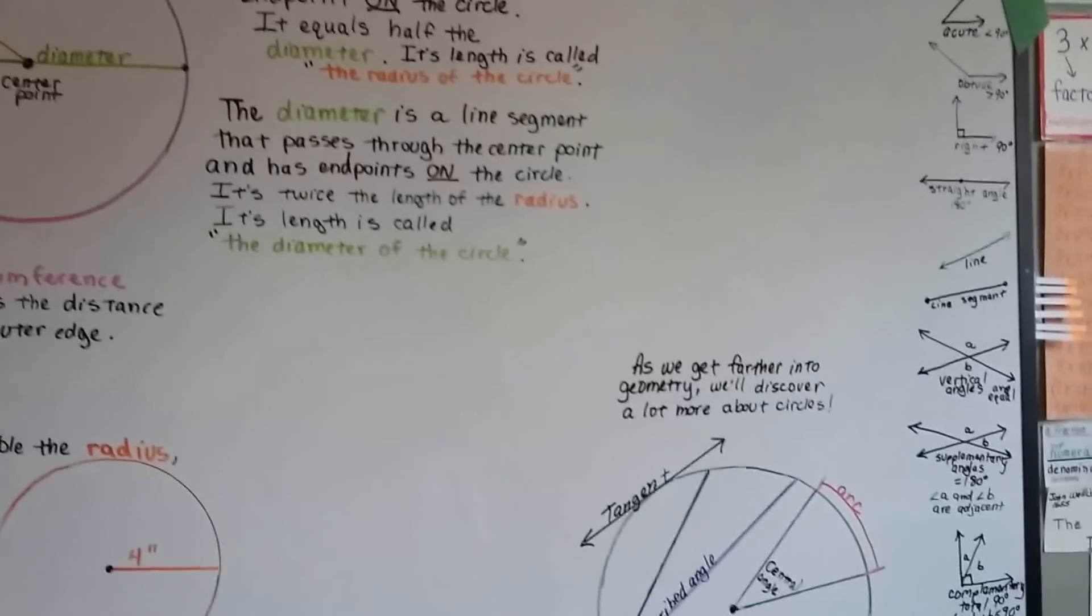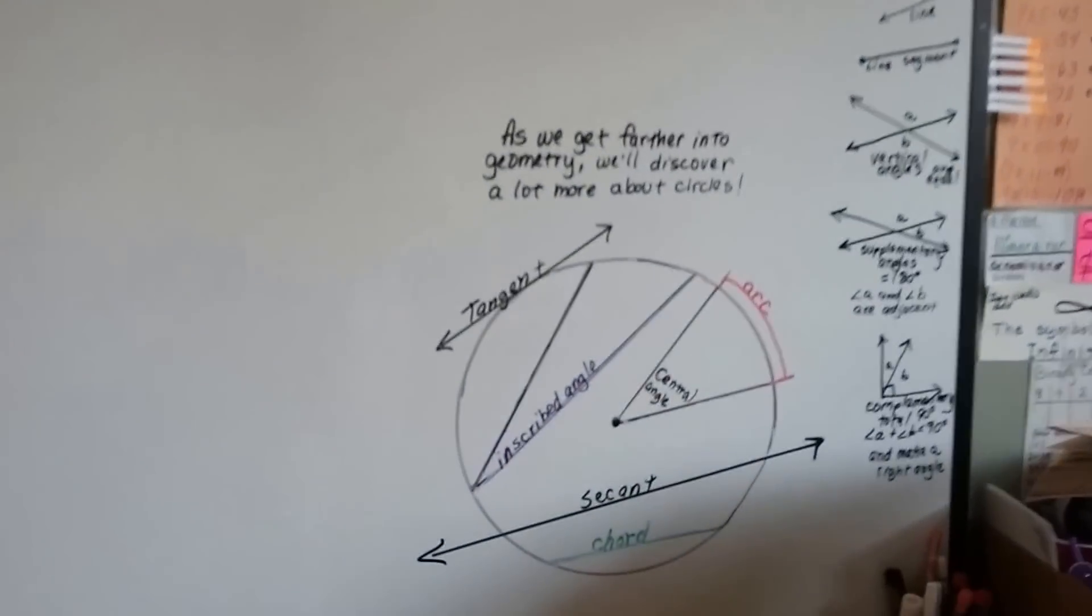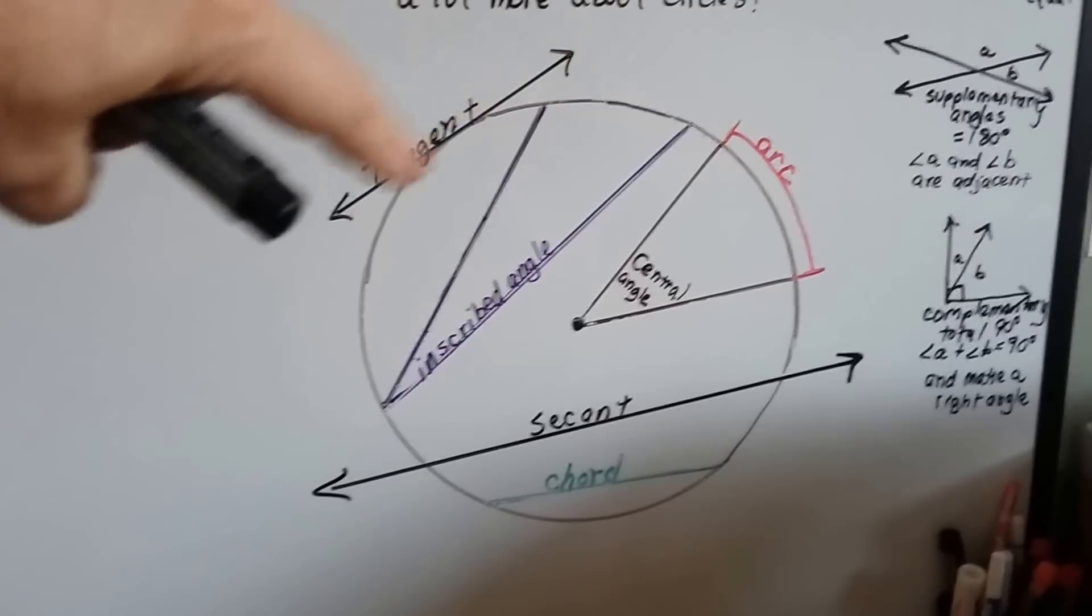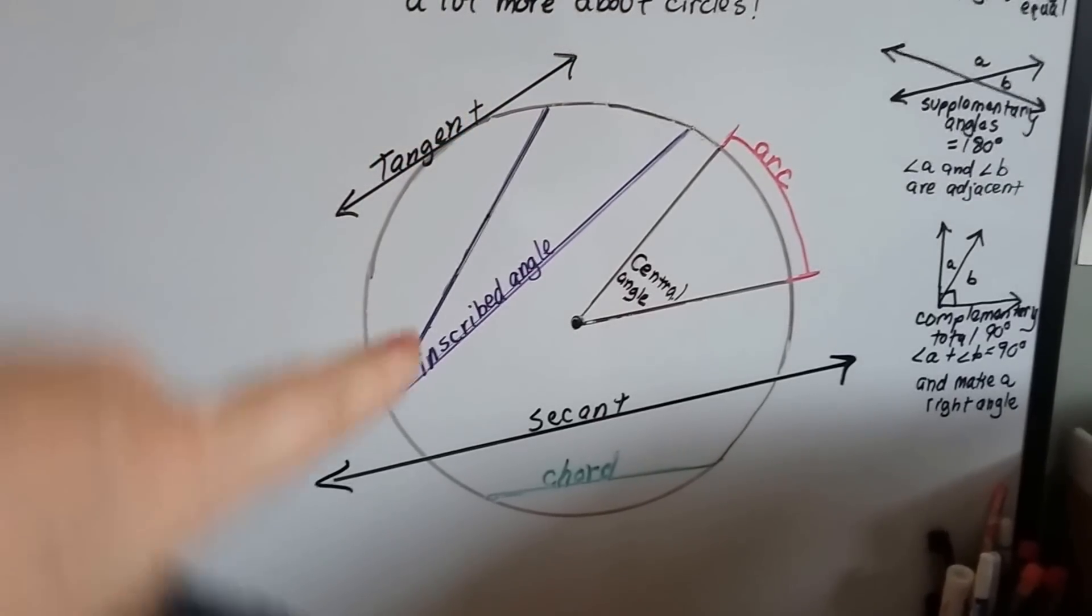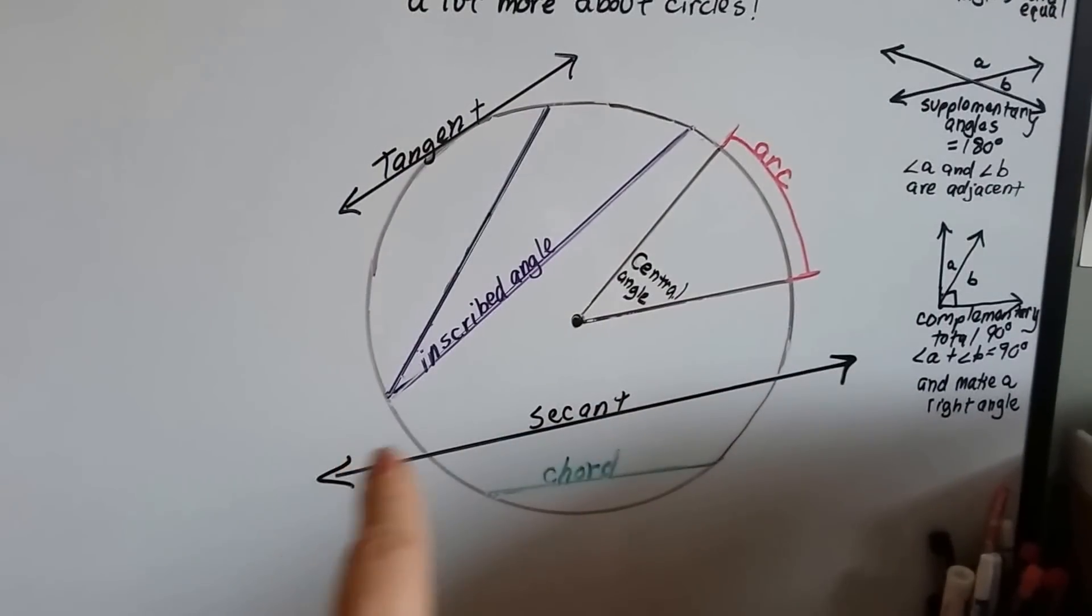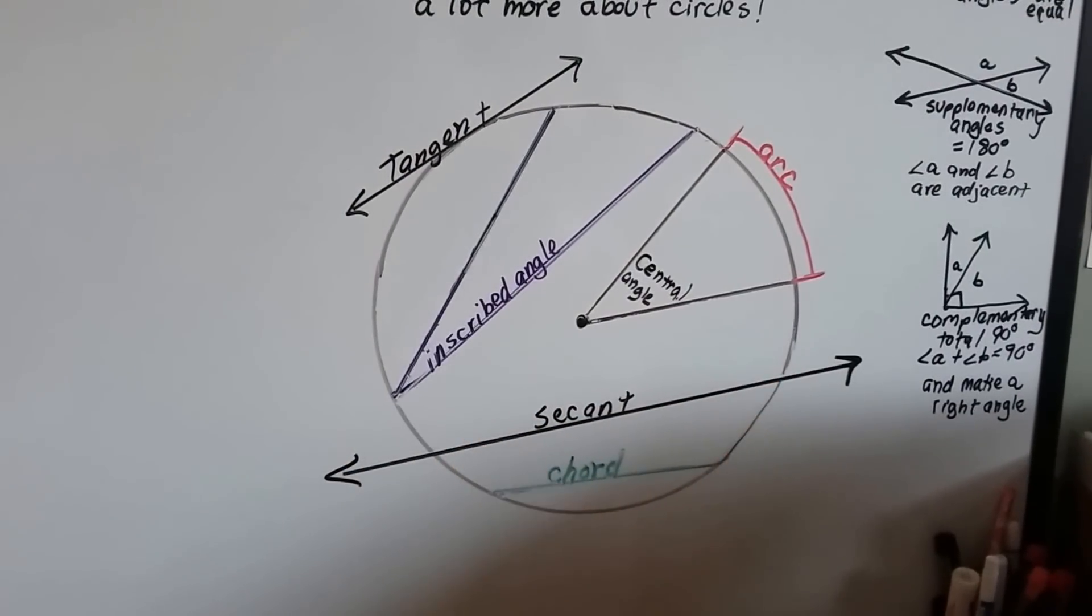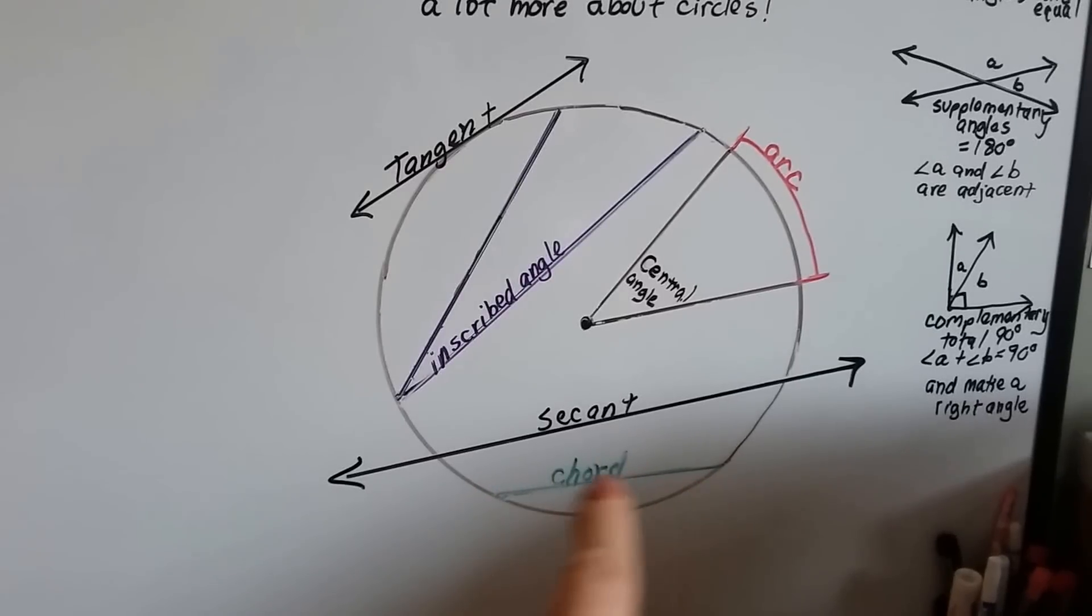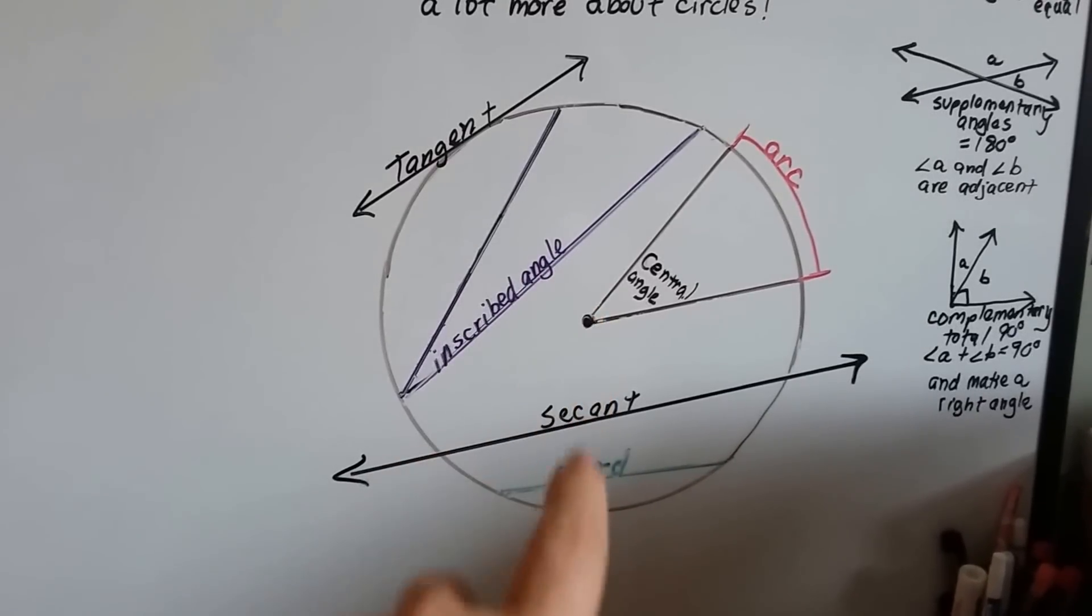As we get farther into geometry, we're going to discover a lot more about circles. There's so many parts to a circle. The tangent is an outside line that touches it at one point. A secant is a line that goes through it and touches it at two points. A chord is sort of like the diameter, except it's on the edge and doesn't go through the center.